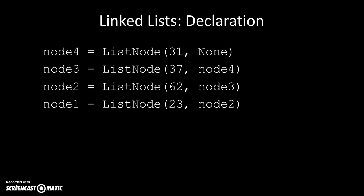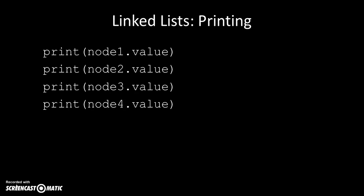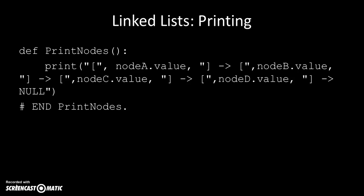Similarly, node 2 points to node 3, and node 1 points to node 2, so we have to declare them in reverse order. We could print them out in the correct order — just the values, not the pointers. We can print out the values of each node as node 1, 2, 3, 4 or in any order we wish. If we want to print it out a bit fancier, we could put the values in square brackets with pointer symbols between them and have the last value pointing to null.